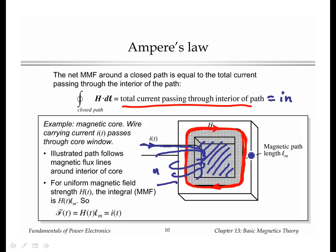If you have multiple windings, you have to add up the amp turns of all the windings to find this right hand side term. So Ampere's law then relates the current, the net current flowing through the hole in the middle of the core to this H dot DL.